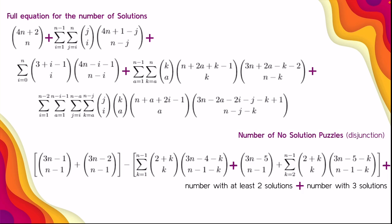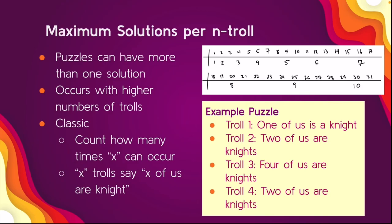For the number of no-solution puzzles in the disjunction version, as with the classic variation, we were only able to find an expression that worked up to n less than 7. Beyond that point, you keep adding more and more expressions — and for the disjunction version we realized that limitation even earlier, since the higher n is, the more terms you have to add and subtract.